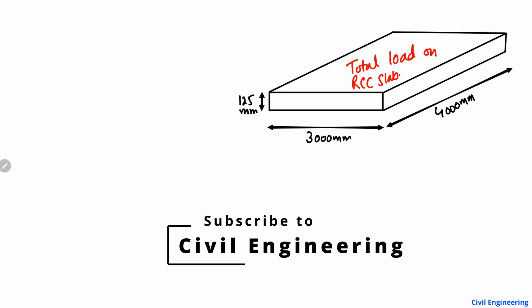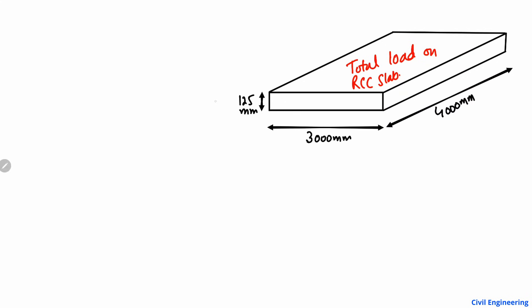Consider the depth of the slab is, for example, 125 millimeters. The width of the slab is 3000 millimeters and the length of the slab is 4000 millimeters. The total load acting on this slab will be equal to the dead load plus the live load.